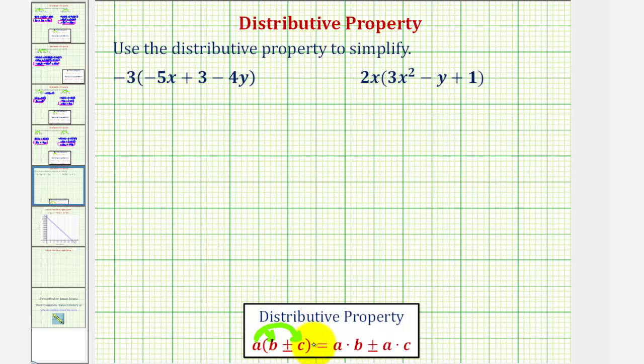Notice how each term inside the parentheses is being multiplied by a. So for our two examples, it looks a little bit different because notice how inside the parentheses we have a trinomial or three terms, but the process will be the same. We'll multiply each term inside the parentheses in this case by negative three.